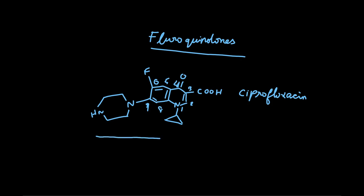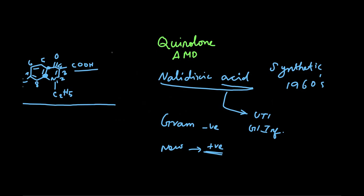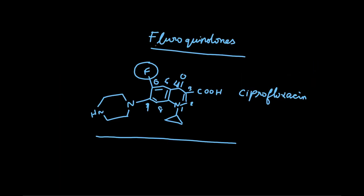And this is the structure of Ciprofloxacin. As you can see, there is a Fluorine substitution in the sixth position. There is no Fluorine substitution in the Nalidixic Acid, and this is called Non-Fluorinated Quinolones. Ciprofloxacin has Fluorine in the sixth position and is called a Fluorinated Quinolone, also called a Fluoroquinolone.